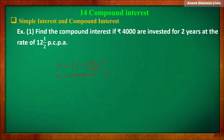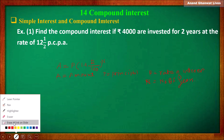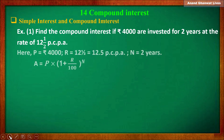In the formula, p is the principal, r is the rate of interest per annum (pcpa), and n is the number of years. Now let us solve this example. The principal — that is, the amount deposited — is 4000 rupees.